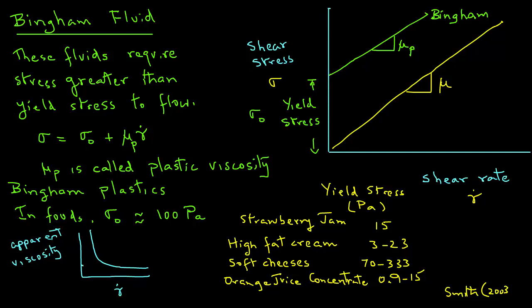This means that at very low gamma dot values, the apparent viscosity is very high. In other words, for very low shear rates, the material behaves like a plastic material - it doesn't move, so it's almost behaving like a solid. As the shear rate increases, the value of viscosity decreases to mu_p.